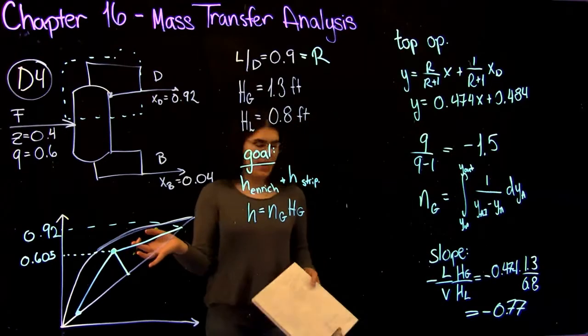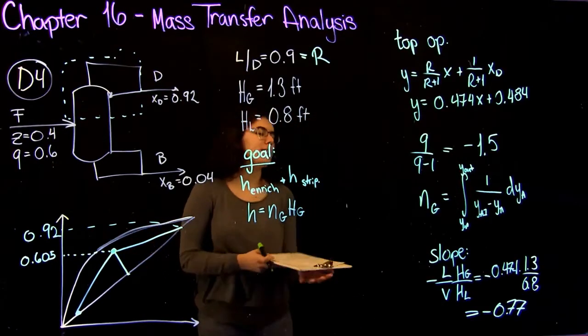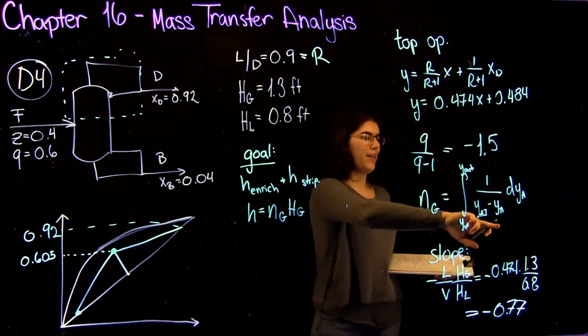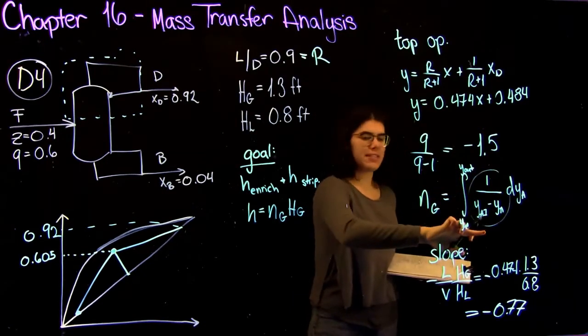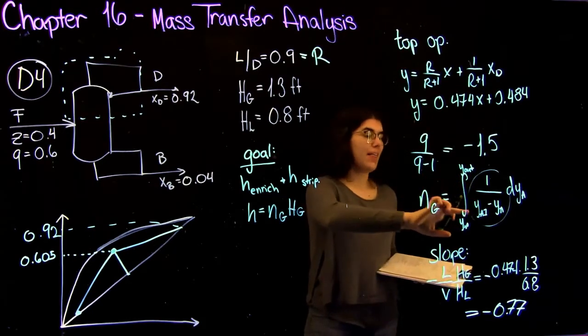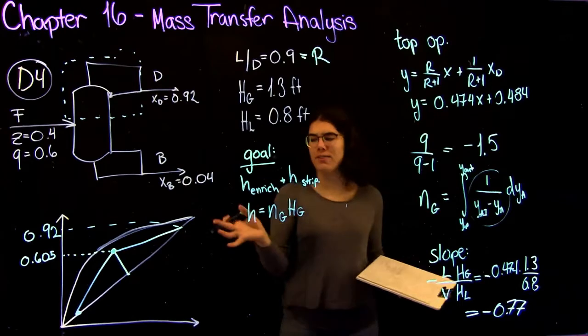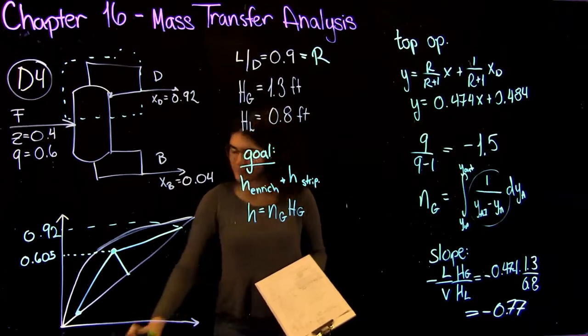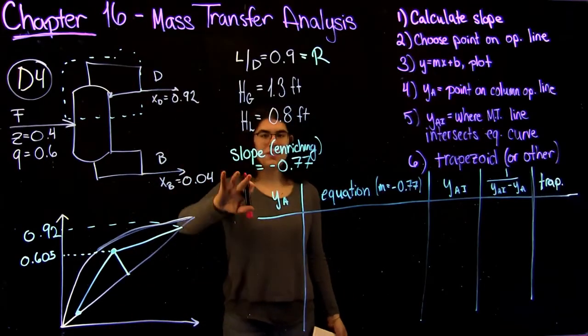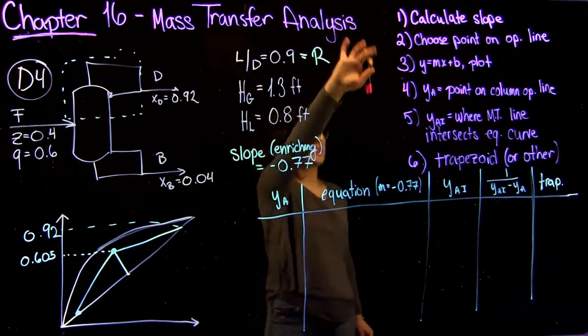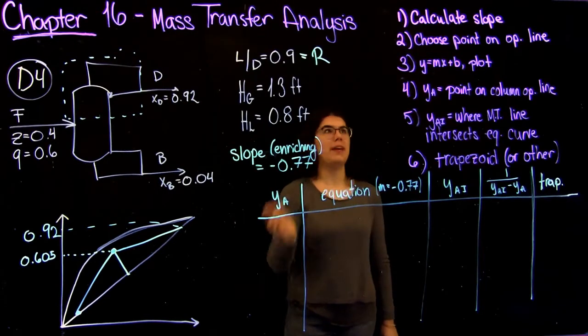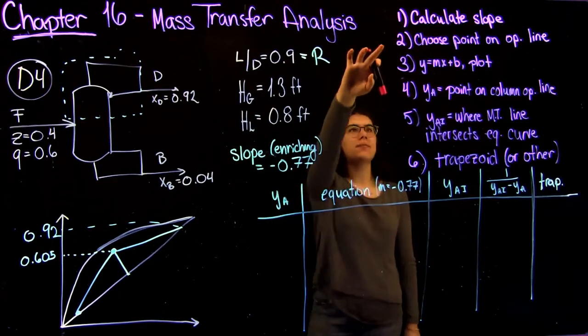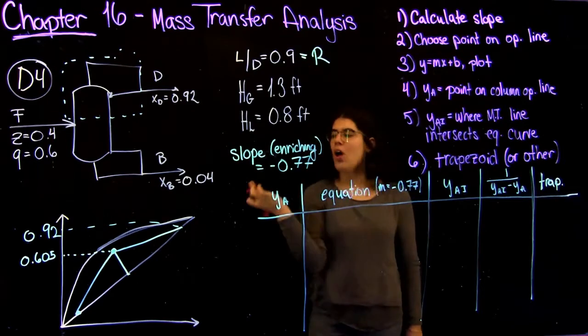Now is going to come the more work intensive part of this process. Our next goal is we're going to try to find these YA values, YAI and YA values, so that we can get an approximation of what's inside here. We can't really find a true formula based on this, so we're going to have to use other methods such as the trapezoid method. I'm going to write down a step-by-step process that we're going to follow. Using the slope that we just calculated, we're now going to go through the step-by-step process that's going to let us find the value of the integral that we need. Step one is to calculate the slope, which we just did and we found to be negative 0.77.